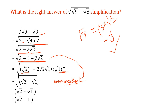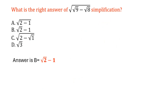We can write the expression as (a minus b)², and then the outer root and the inner square cancel each other. So we get root 2 minus root 1, and root 1 is just 1. Therefore our answer is root 2 minus 1, which is the correct answer — option b.